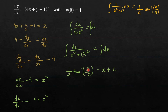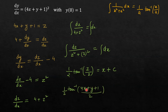Now we will have to replace z with x and y. The value of z is equal to 4x plus y plus 1. So it will become: half tan inverse of (4x plus y plus 1) divided by 2 is equal to x plus c. This is the solution of our given differential equation.